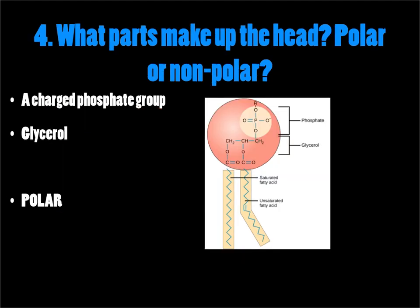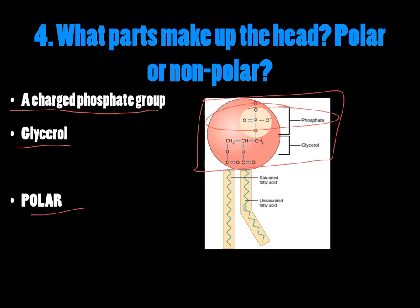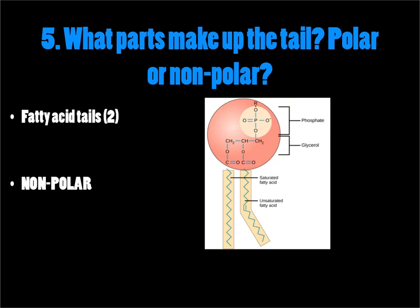What parts make up the head, and are those parts polar or nonpolar? The head is made up of a charged phosphate group and glycerol. The phosphate's charged, so the head — this ball on top — would be polar. What parts make up the tail, and are these polar or nonpolar? The tail portion of the phospholipid molecule consists of two fatty acid tails. Since they're fats, since they're lipids, they are nonpolar. So the tails would be nonpolar.